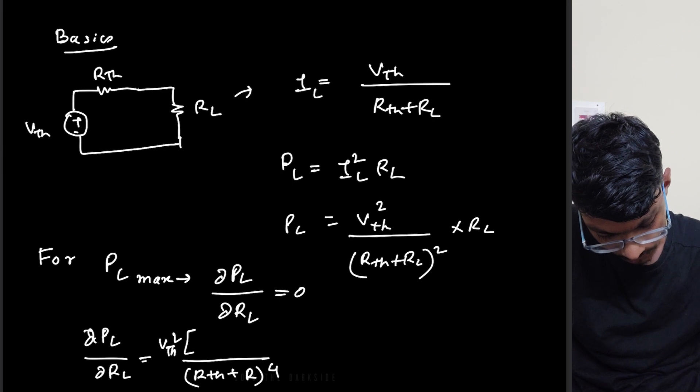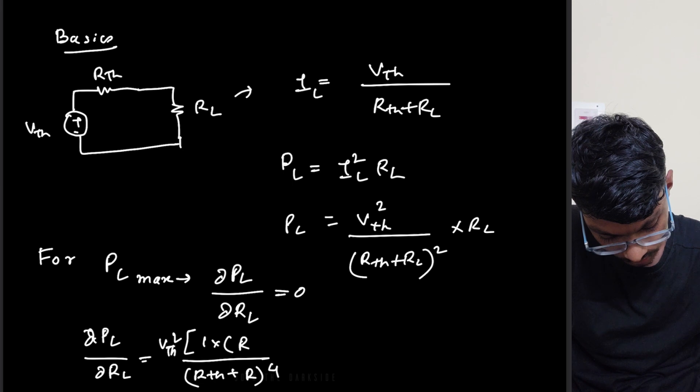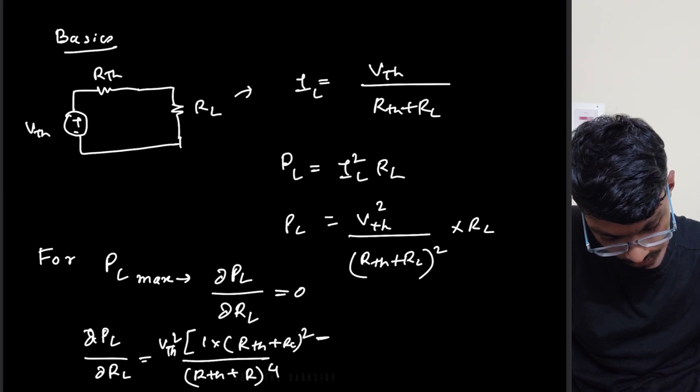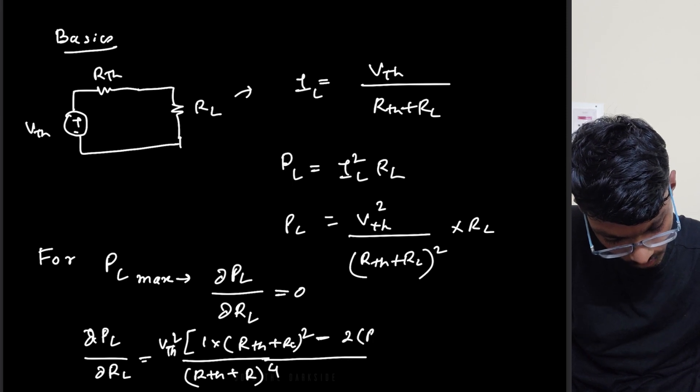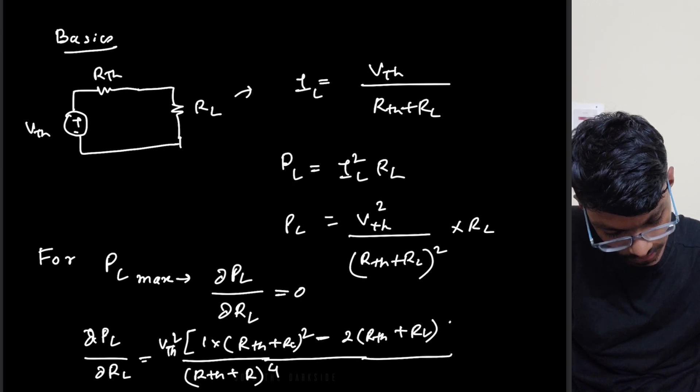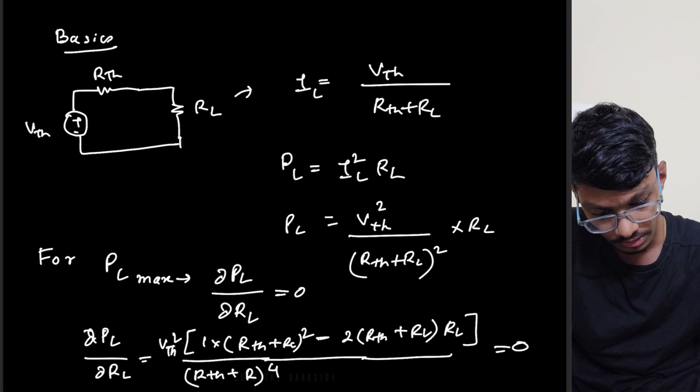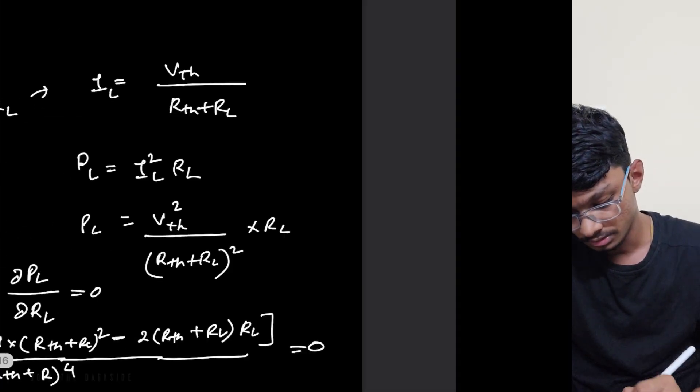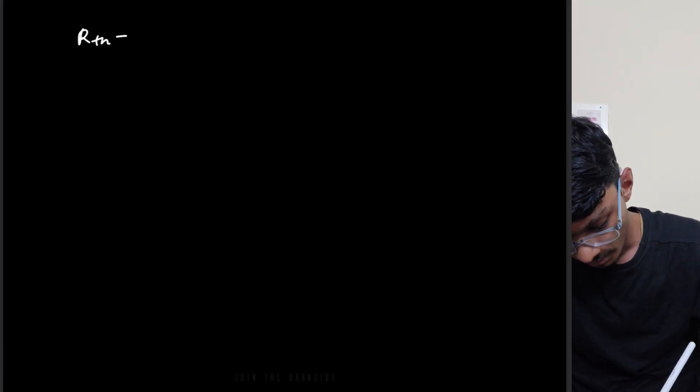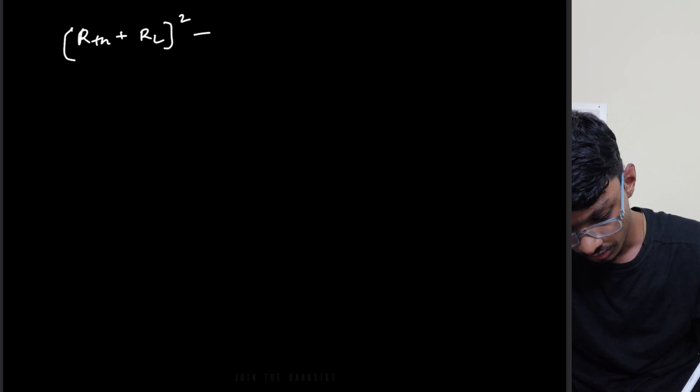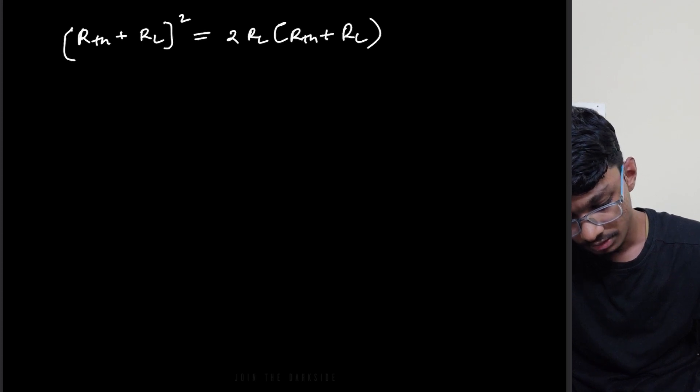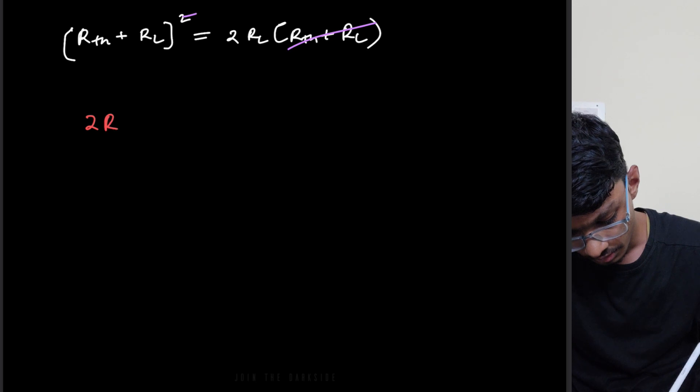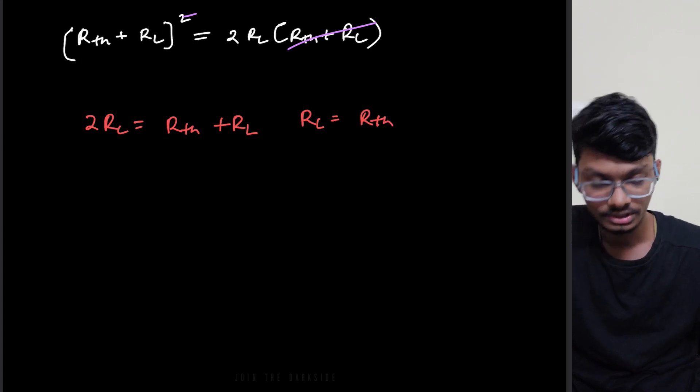Vth square is outside. We have this RL derivative is 1 then (Rth plus RL) whole square minus 2(Rth plus RL) times RL. Now this has to be zero, then this upper portion has to be zero. So (Rth plus RL) whole square equals to 2 RL into (Rth plus RL). So basically this cancels each other out. Now we are left with only 2 RL equals to Rth plus RL, so RL equals to Rth.